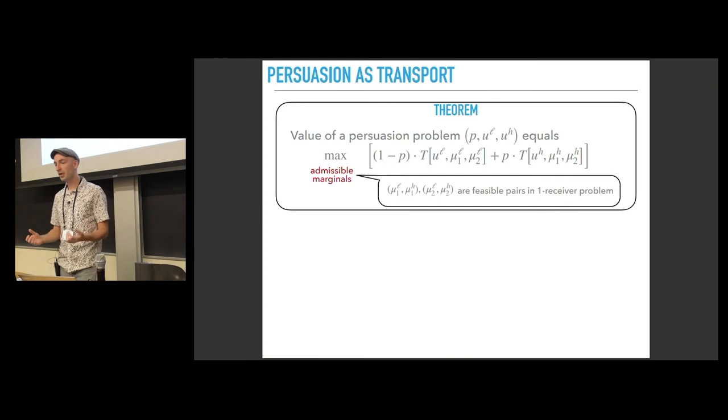So what is this admissibility? We call the marginals admissible if the following is true. Mu 1l and mu 1h must form a feasible pair of conditional distributions in a one-receiver problem. And similarly, the pair mu 2l and mu 2h must be a feasible pair of conditional distributions in a one-receiver problem.